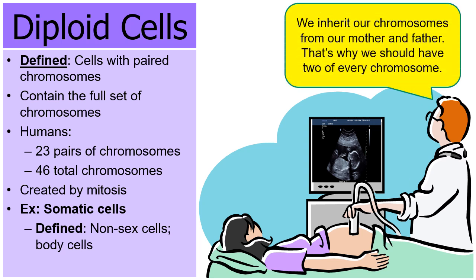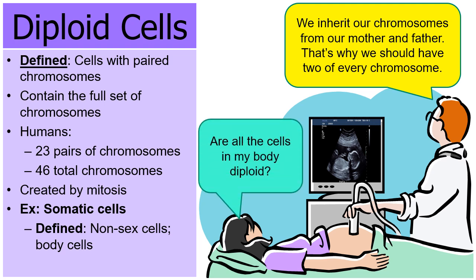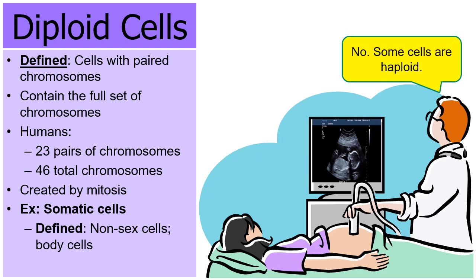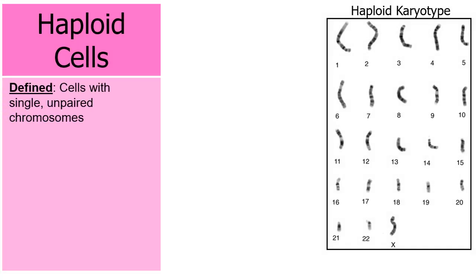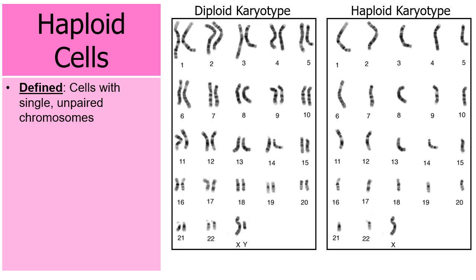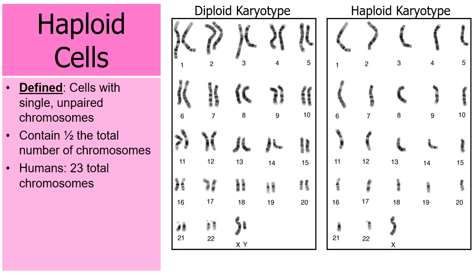We inherit our chromosomes from our mother and father — that's why we have two of every chromosome. Not all cells in the body are diploid; some cells are haploid. Haploid cells are cells with single or unpaired chromosomes. Looking at the picture, there's only one chromosome 11, not two, and one chromosome 18, not two. Compared to the diploid karyotype, diploid chromosomes are paired while haploid chromosomes are singles. Haploid cells contain only half the total number of chromosomes — in humans that's 23 chromosomes, since the diploid number is 46.